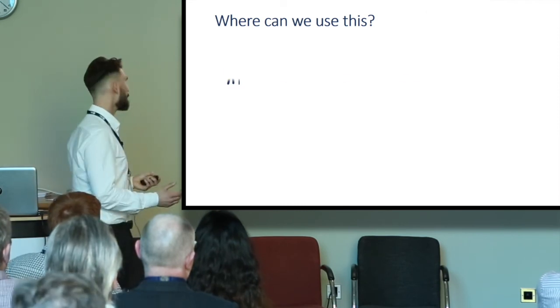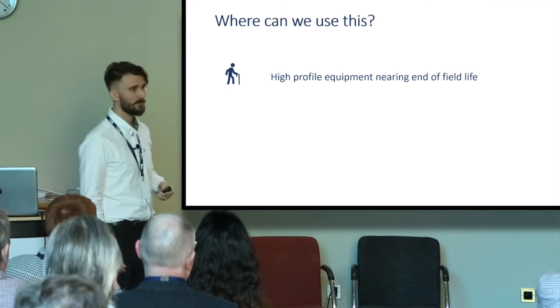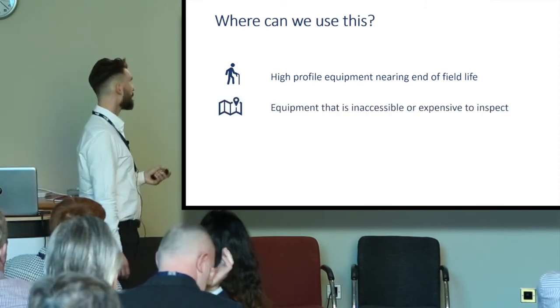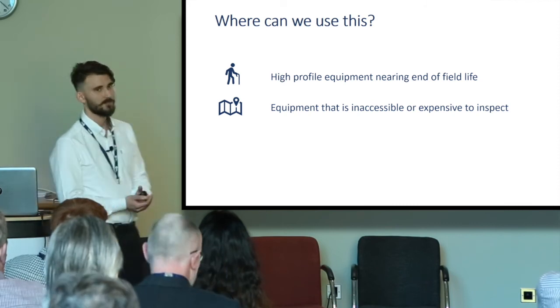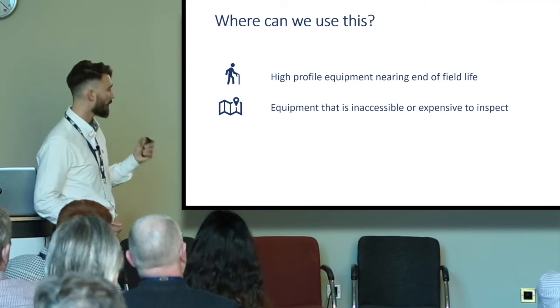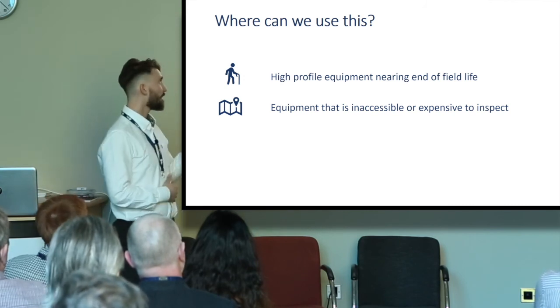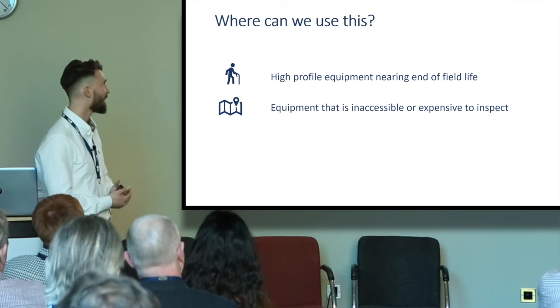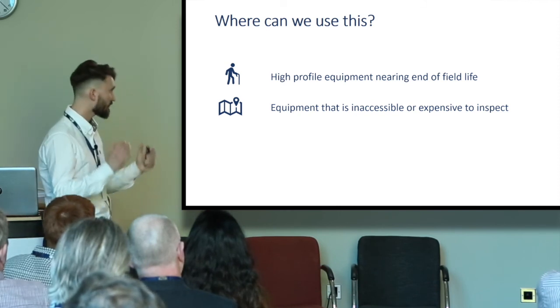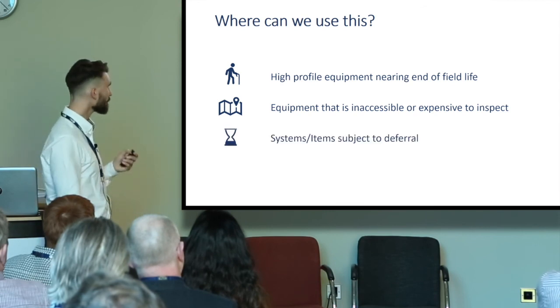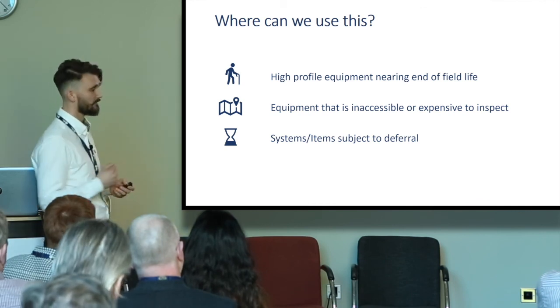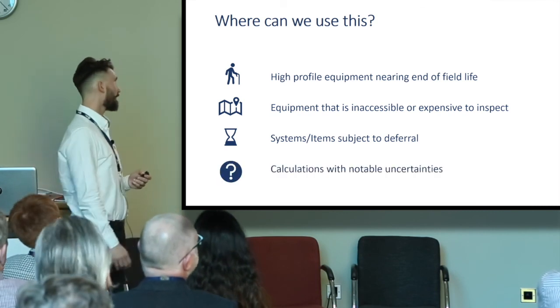So where have we and where can we use this? High profile equipment nearing end of field life, as I was saying that date's quite fluid. Equipment that's inaccessible or expensive to inspect. In this case you probably don't have much, if any, inspection data. To pinpoint numbers and tell yourself how much longer that equipment's going to last is quite difficult. To accept that you have uncertainties in that, you're actually giving yourself more information. It's more useful. Systems or items subject to deferral, this again goes with our changing date and seeing how those probabilities change.